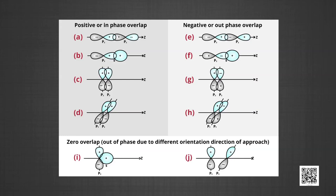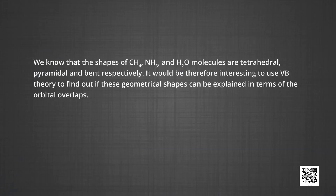From the figure, we can understand positive, negative and zero overlap. Zero overlap means out of phase due to different orientation and direction of approach. The criteria of overlap as the main factor for the formation of covalent bonds applies uniformly to homonuclear or heteronuclear diatomic and polyatomic molecules.